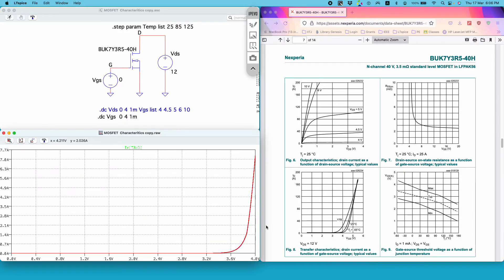You see I get this curve, this particular curve and this is very similar to the curve pattern in the data sheet. Obviously the data sheet has three different curves for three different temperatures.